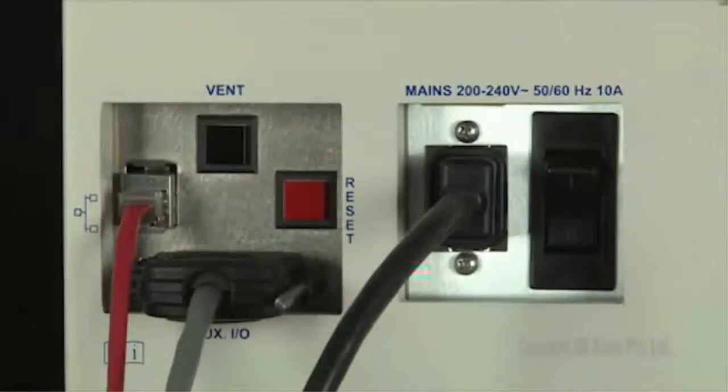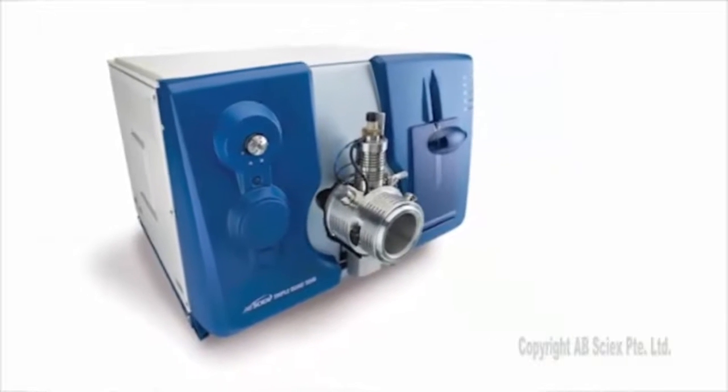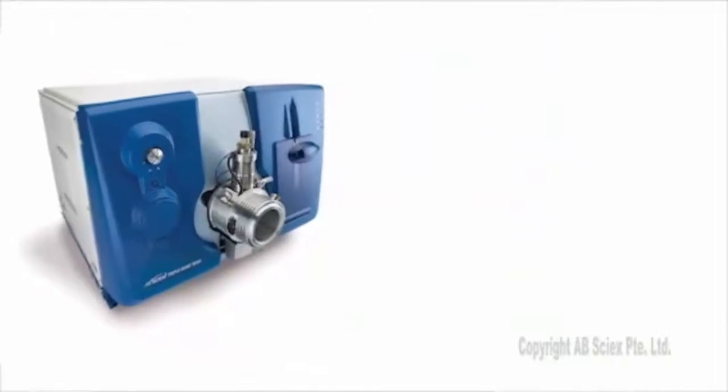Power on the mass spectrometer by pressing the black power switch to the on position. On the 5500 series of instruments, this will also start the roughing pump.